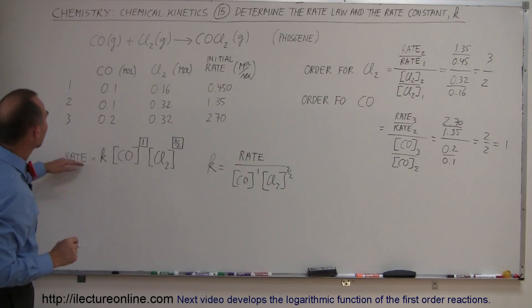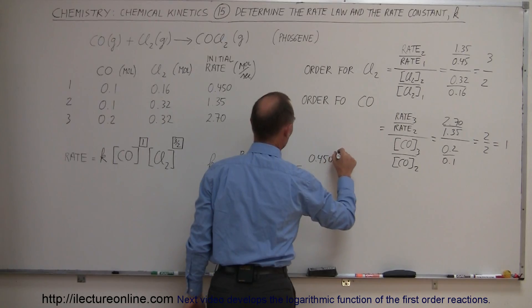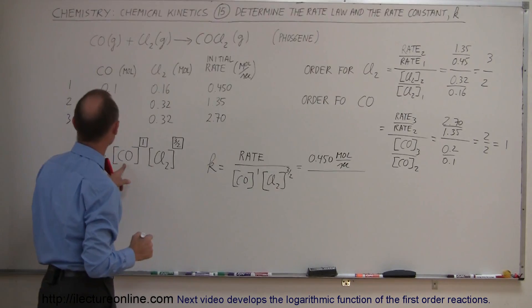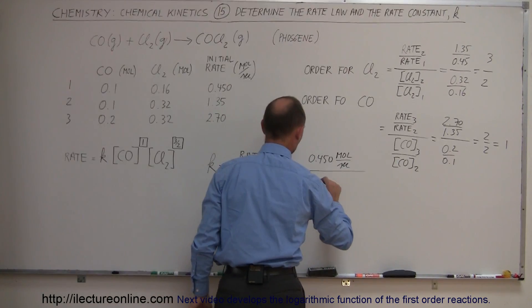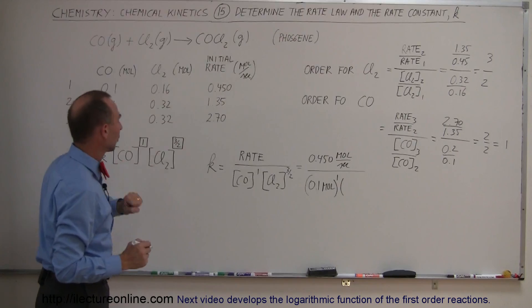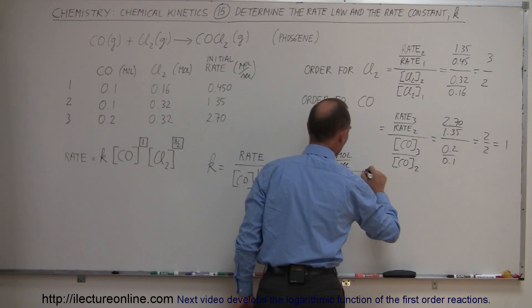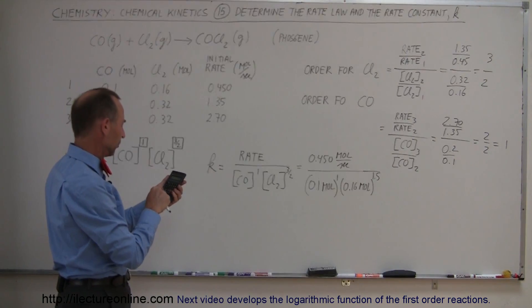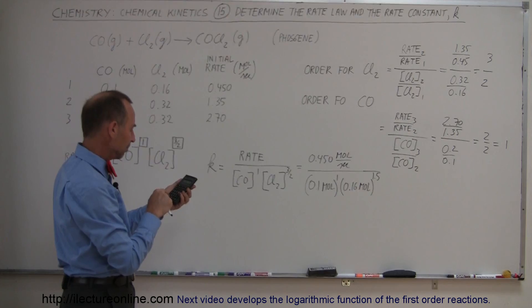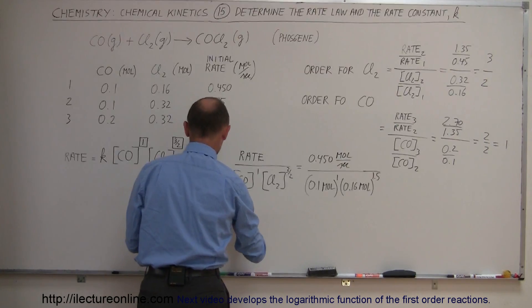Let's use experiment 1. The rate at that time was 0.450 moles per second. The concentration of carbon monoxide was 0.1 moles to the first power, times the concentration for chlorine gas, which is 0.16 moles to the 1.5 power. So we have 0.45 divided by 0.1 to the first power and 0.16 raised to the 1.5 power. We get k equal to 70.